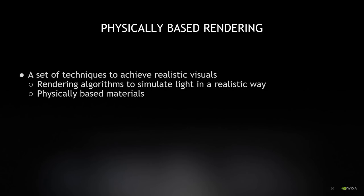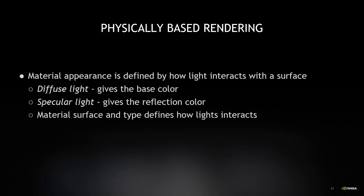So how do we achieve a realistic look? We achieve that by utilizing physically based rendering — simply a set of techniques to achieve realistic visuals. It's a set of rendering algorithms that can simulate light in a realistic way, such as ray tracing, and that also includes physically based materials. This realistic material appearance is defined by how light interacts with a surface. In context of rendering, we usually talk about diffuse light, which gives the base color for a material, and then specular light, which gives the reflection color for a material. And material surface and its type — whether it's metal or not — defines how light will interact.